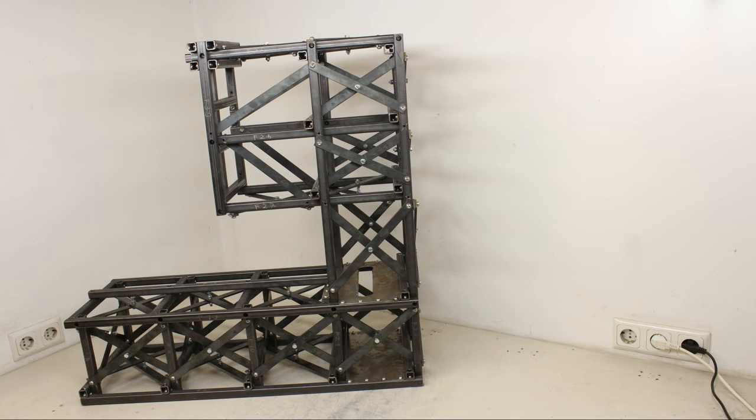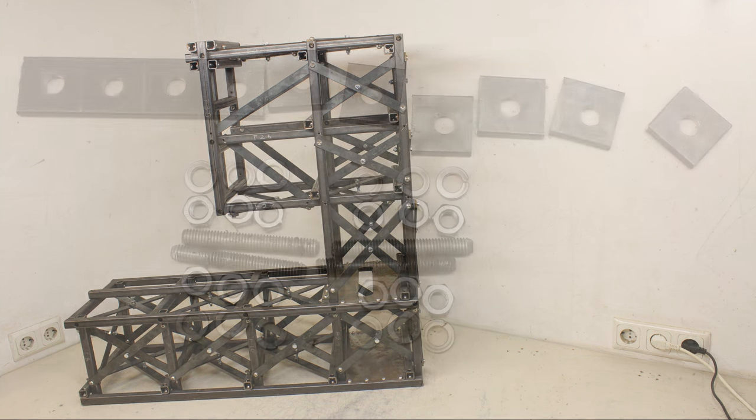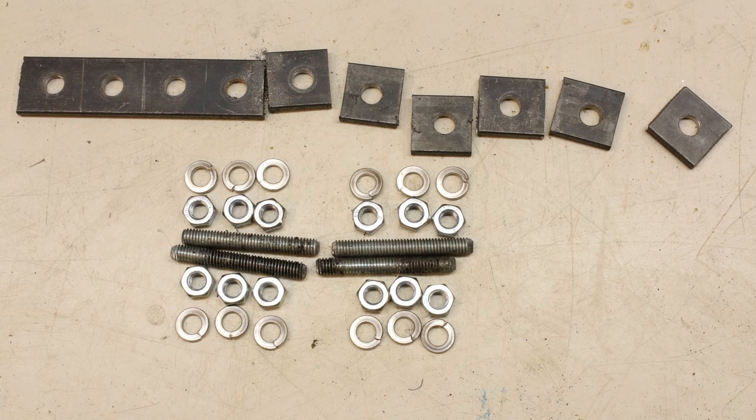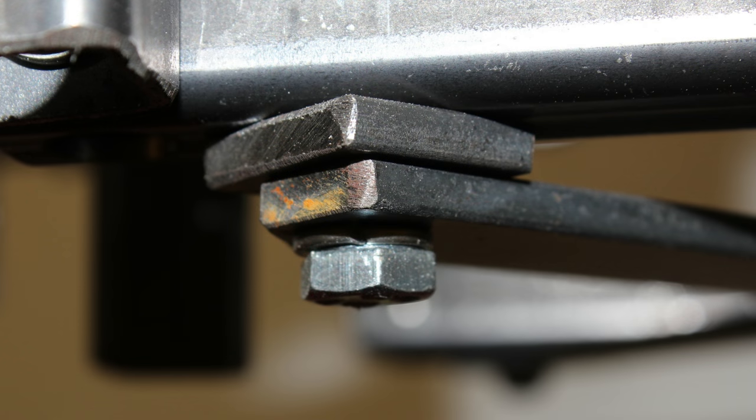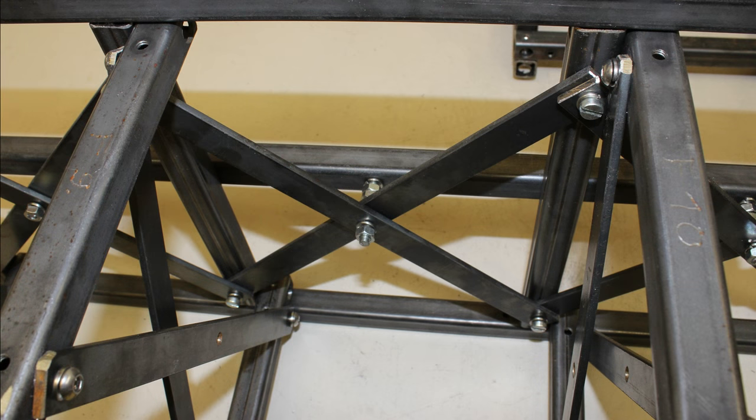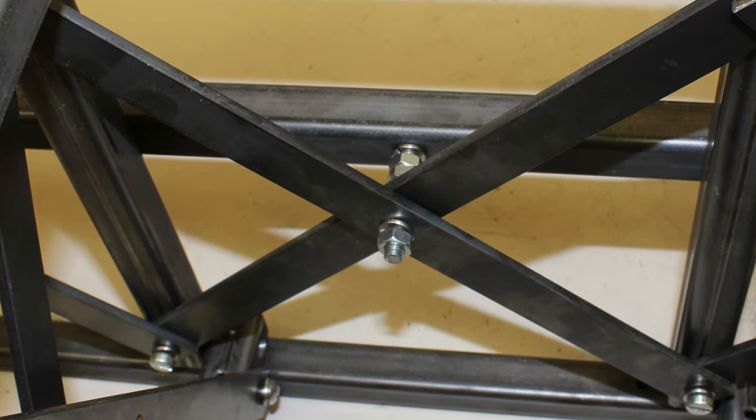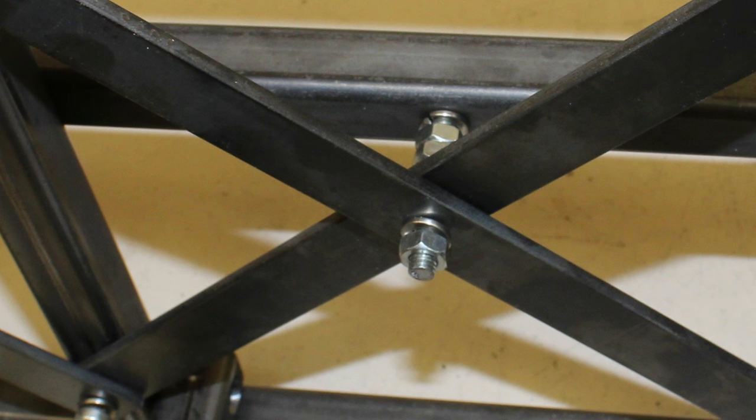Using flat irons of the dimensions 20x4mm I have added crossbars to make the framework even stiffer. A couple of distance pieces were cut from the flat iron bars to make it all fit in. At the center points, the crossbars are linked through 6mm bolts and nuts.